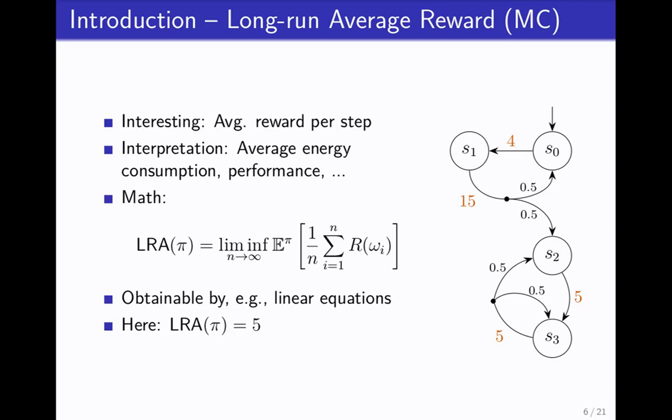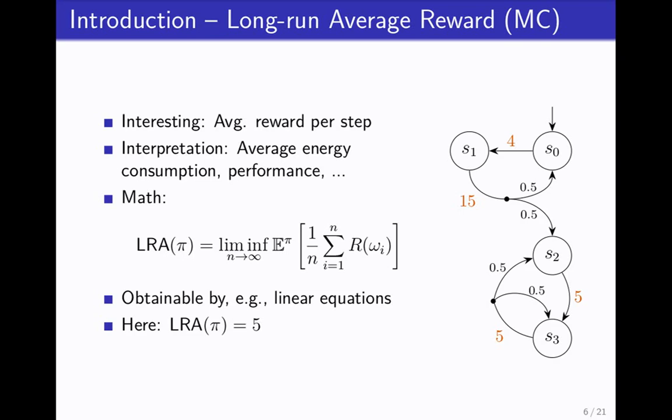Here's the math. It's known how to solve this. You can do linear equations. For this particular strategy, notice that eventually the robot will fall down on the ground and then do its floor moves. So basically we get five reward on average here. The finite prefix doesn't matter because we only look at the limit.